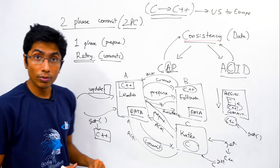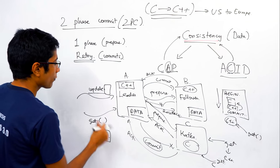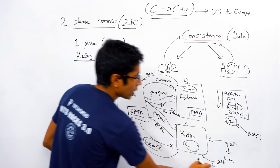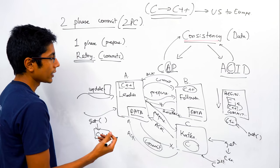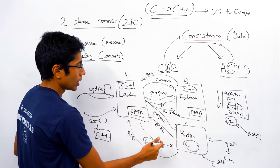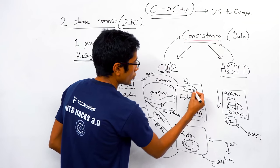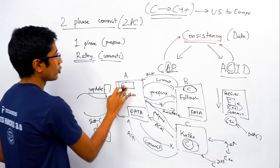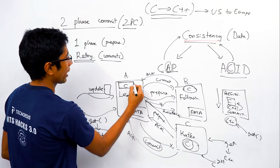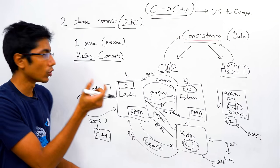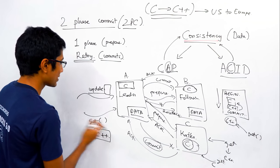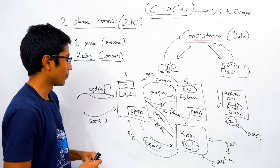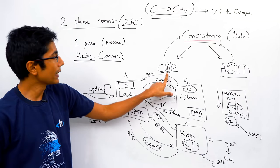Is there any remaining problem? If you commit C++ at the leader and the commit message doesn't reach a follower, you get inconsistent reads. The solution: block all read and write operations on that row using locks — both at the leader and the follower. Any get request returns nothing while waiting. The system is not available, but it is consistent.